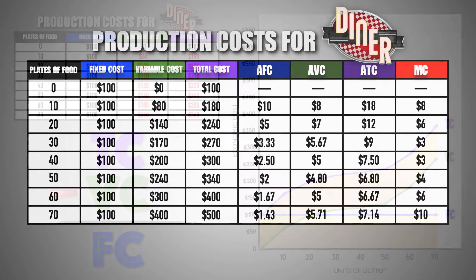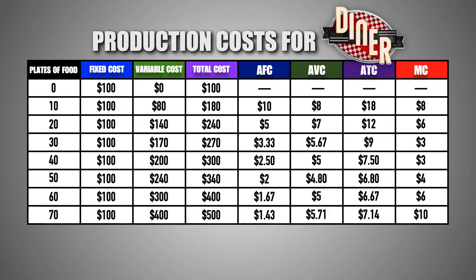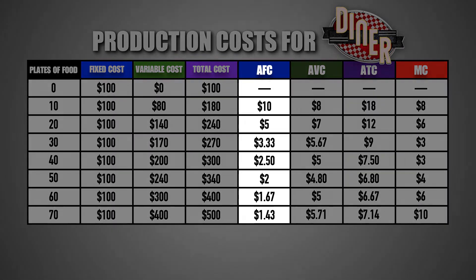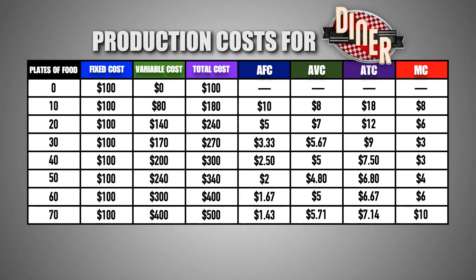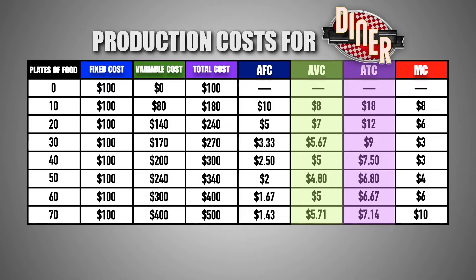Now let's turn our attention towards per unit cost curves. Provided is the per unit production cost data for the diner. Here we can see the average fixed cost, average variable cost, average total cost, and the marginal cost of production at various levels of output. Notice that the fixed cost per unit decreases as the diner produces more meals, while variable costs, total costs, and marginal costs initially decrease and then increase as output increases. Also notice that the difference between the average total cost and average variable cost of production at each output level is the sum of the average fixed production costs for the firm.